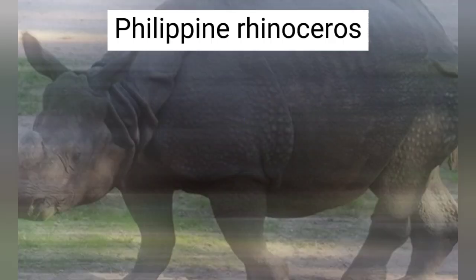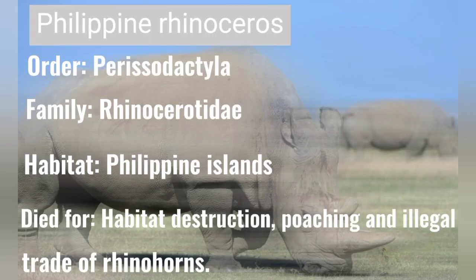Philippine Rhinoceros — order: Perissodactyla, family: Rhinocerotidae. Habitat: Philippine islands. Died due to habitat destruction, poaching, and illegal trade of rhinoceros.